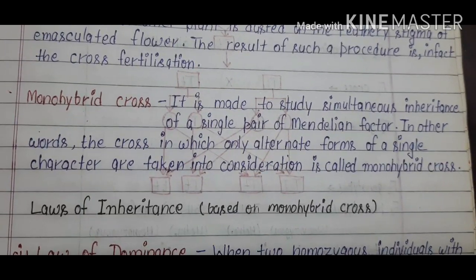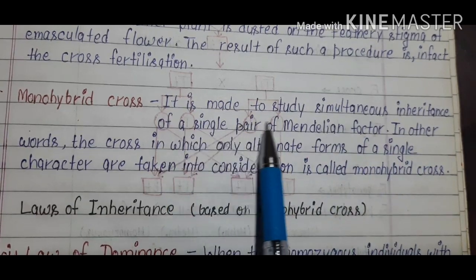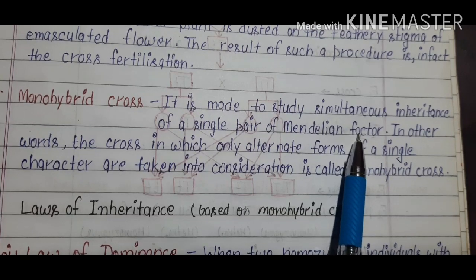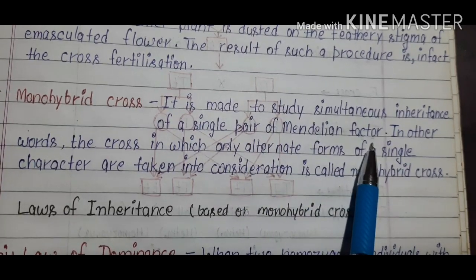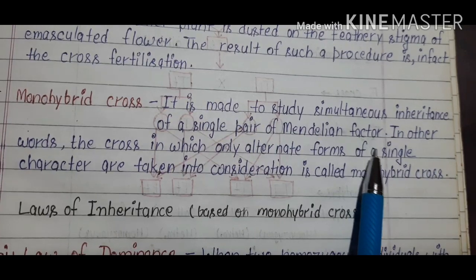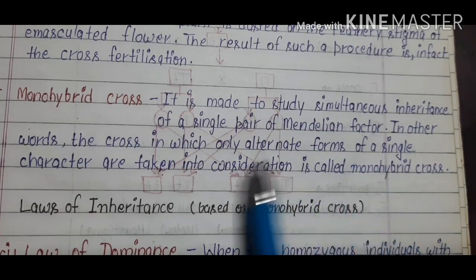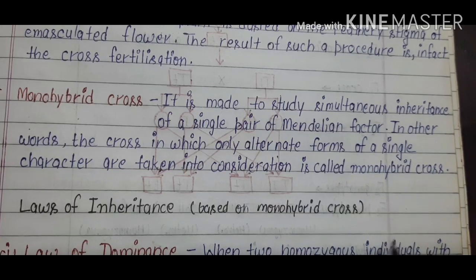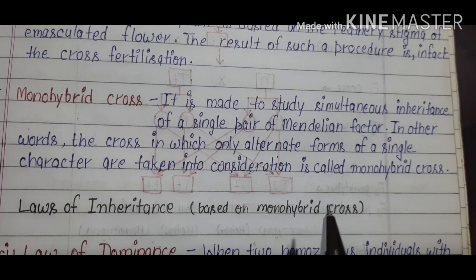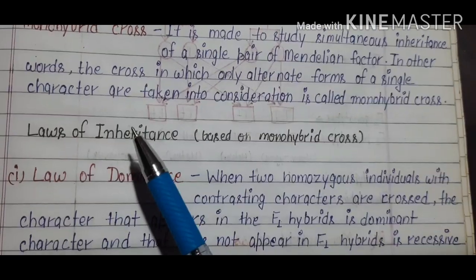Next is the monohybrid cross. It is the study of simultaneous inheritance of a single pair of Mendelian factors. In a monohybrid cross, only one single pair of Mendelian factors is taken for crossing. In other words, a cross in which only alternate forms of a single character are taken into consideration is called a monohybrid cross.